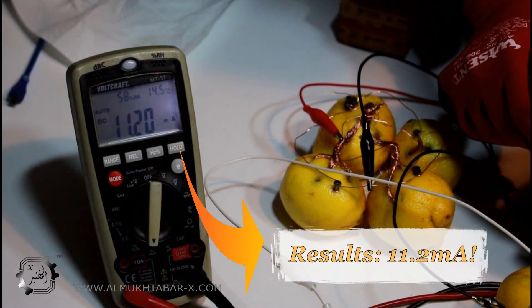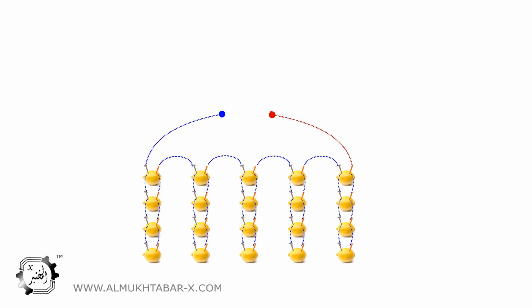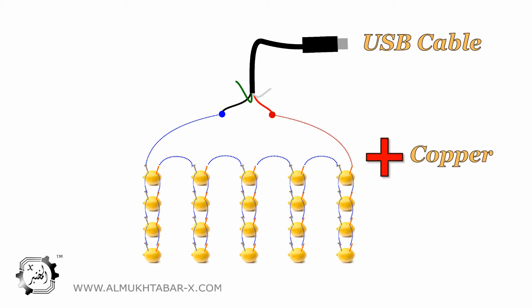Now before we can start charging the mobile, one more step needs to be done. Since smartphones don't really come with an input for lemon charger, we need to connect a USB cable to our lemon battery. So simply cut the USB cable and only connect the red wire to the positive pole and the black wire to the negative pole.